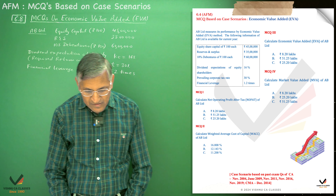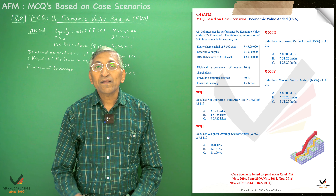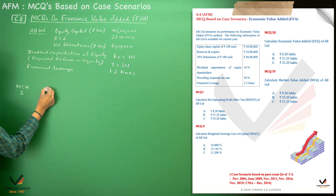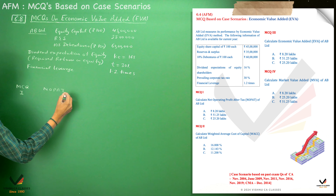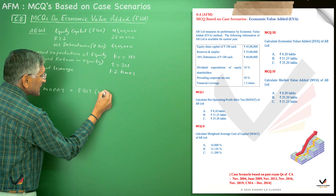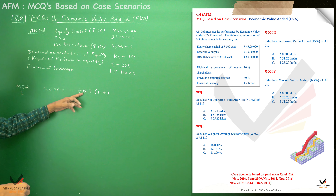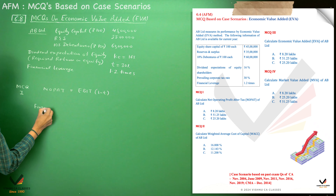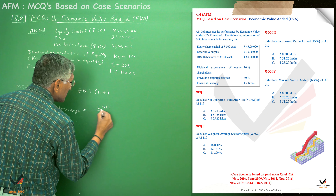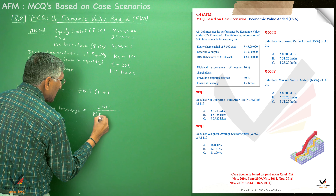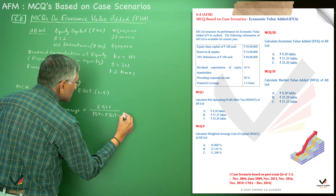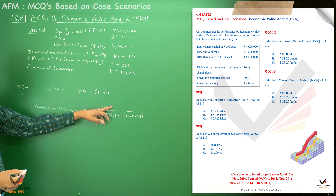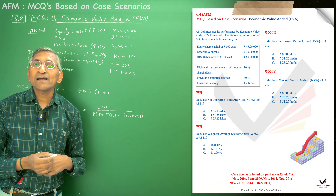Now for MCQ number one, we calculate net operating profit after tax of AB Limited. NOPAT equals EBIT into (1 minus tax). To find EBIT, we use the financial leverage ratio: Financial Leverage = EBIT / PBT, where PBT = EBIT minus interest on debt. Interest on debt is 10% of Rs 60 lakhs, which equals Rs 6 lakhs.